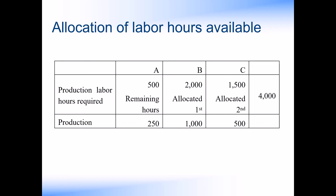We could allocate the remaining 500 hours to producing some of product A. Given the number of hours required to produce each unit, we would be able to produce a total of 250 units. Using this approach enables us to maximise the total contribution to the firm from the labour hours available to us.